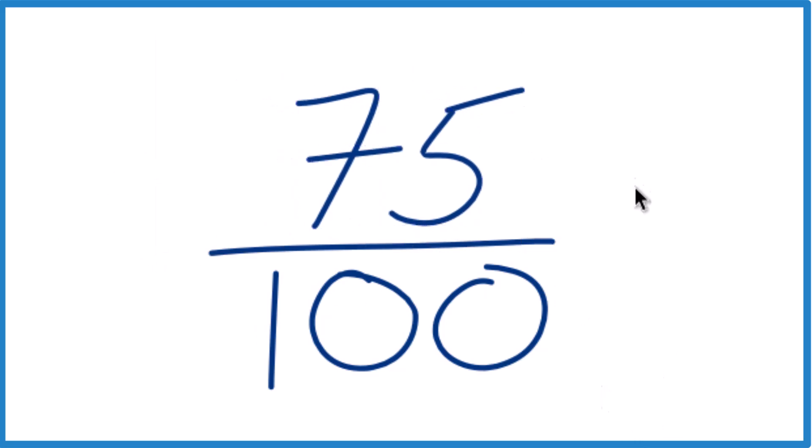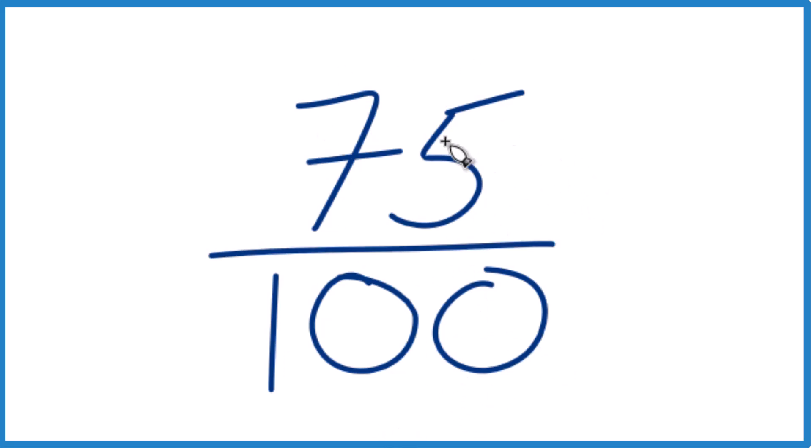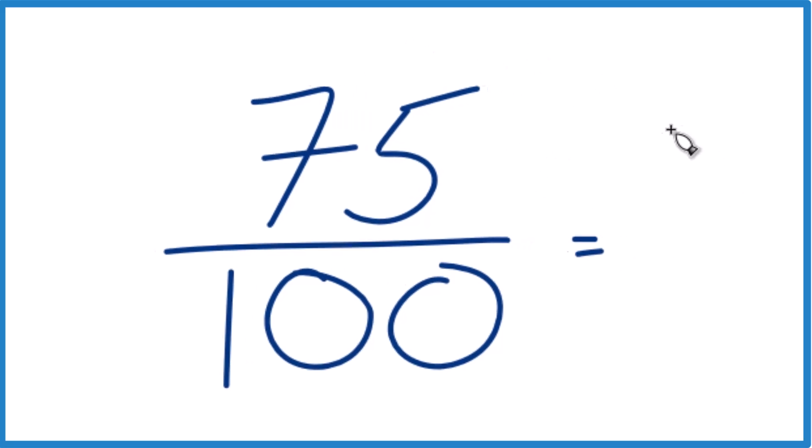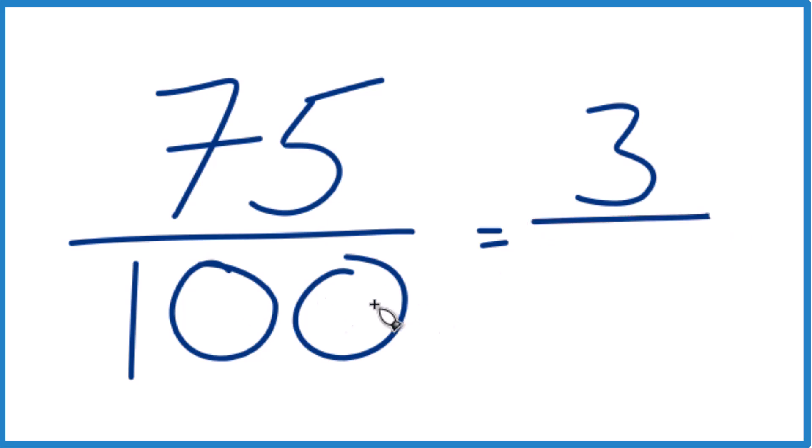And we can simplify that because 25 goes into both 75 and 100. So 25 goes into 75. We'd say 75 divided by 25 equals 3. 100 divided by 25 is 4. 4 times 25 is 100. And that simplifies out to 3 fourths.